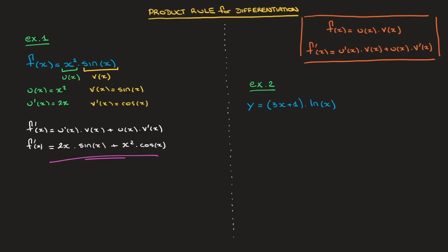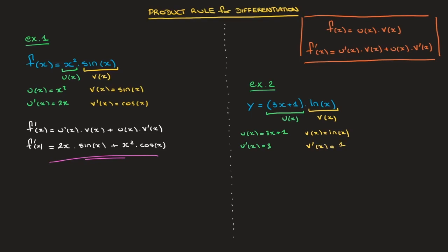Let's look at the second example. We have y equal to 3x plus 1 times ln of x. Once more, we're dealing with a product of two functions. We'll call 3x plus 1 u of x, and ln of x v of x. So u of x equals 3x plus 1, and therefore u dash of x equals 3, and v of x equals ln of x, and therefore v dash of x equals 1 over x.